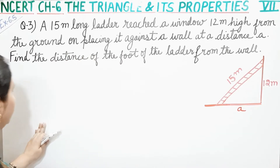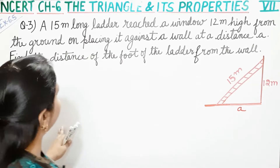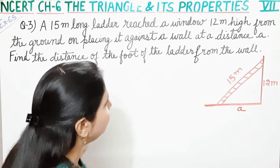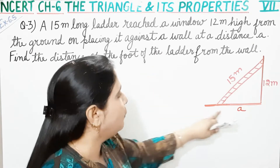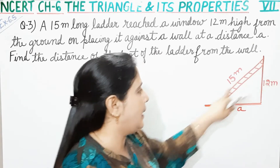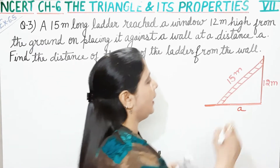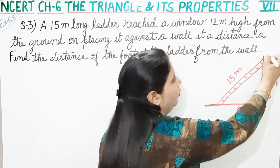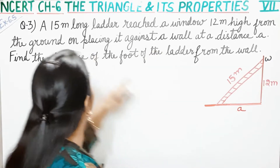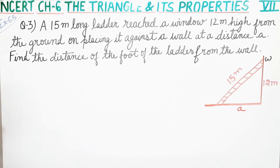This is question number 3. A 15 meter long ladder reached a window 12 meter high from the ground, on placing it against a wall at a distance A.